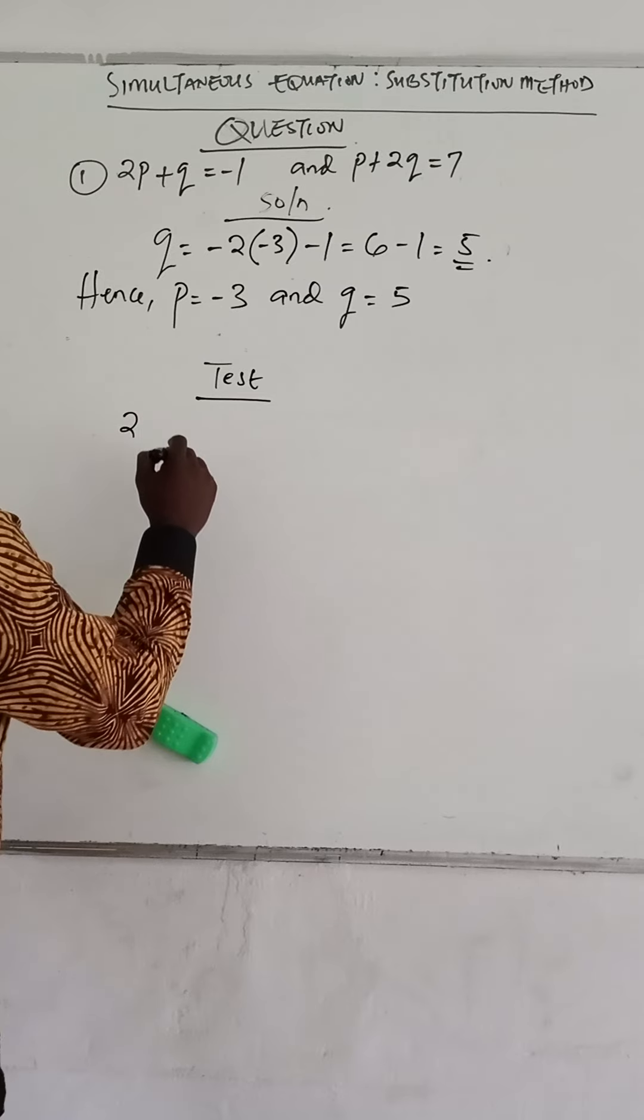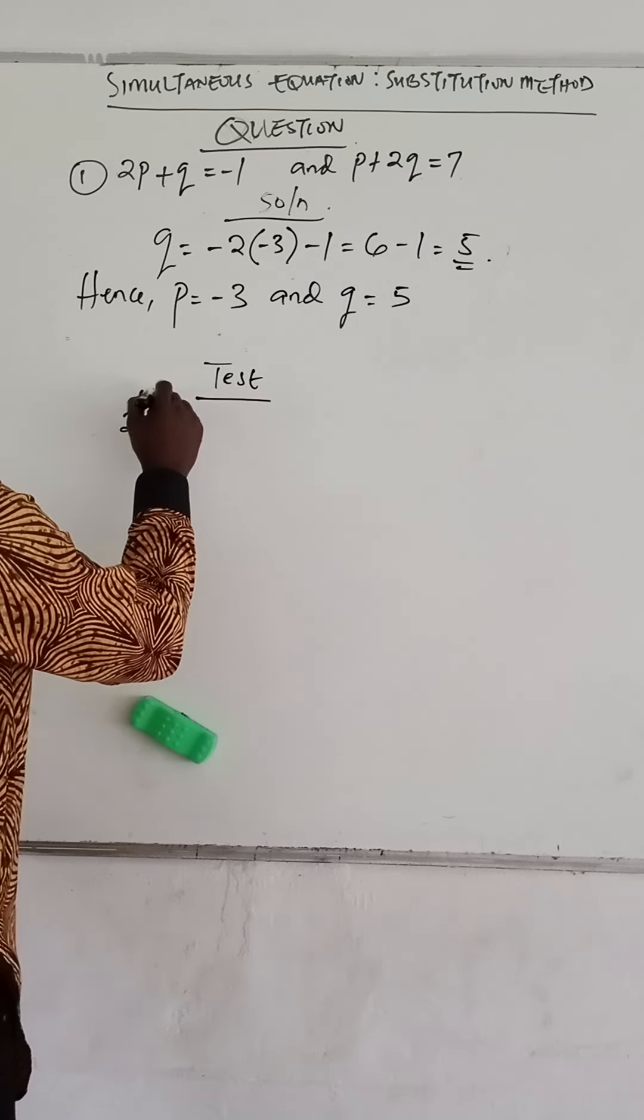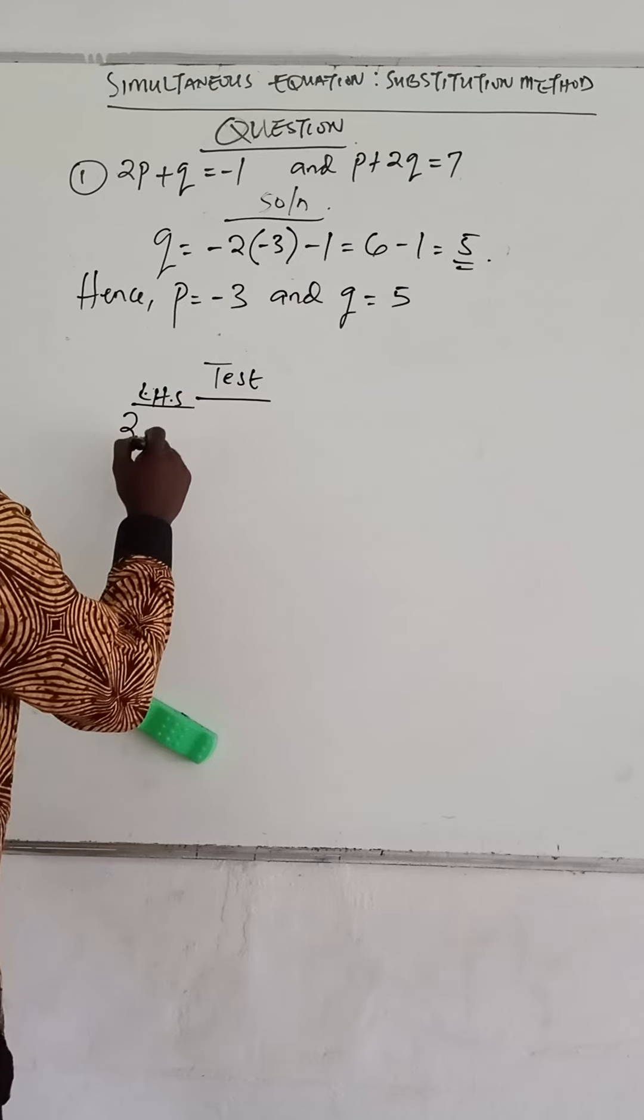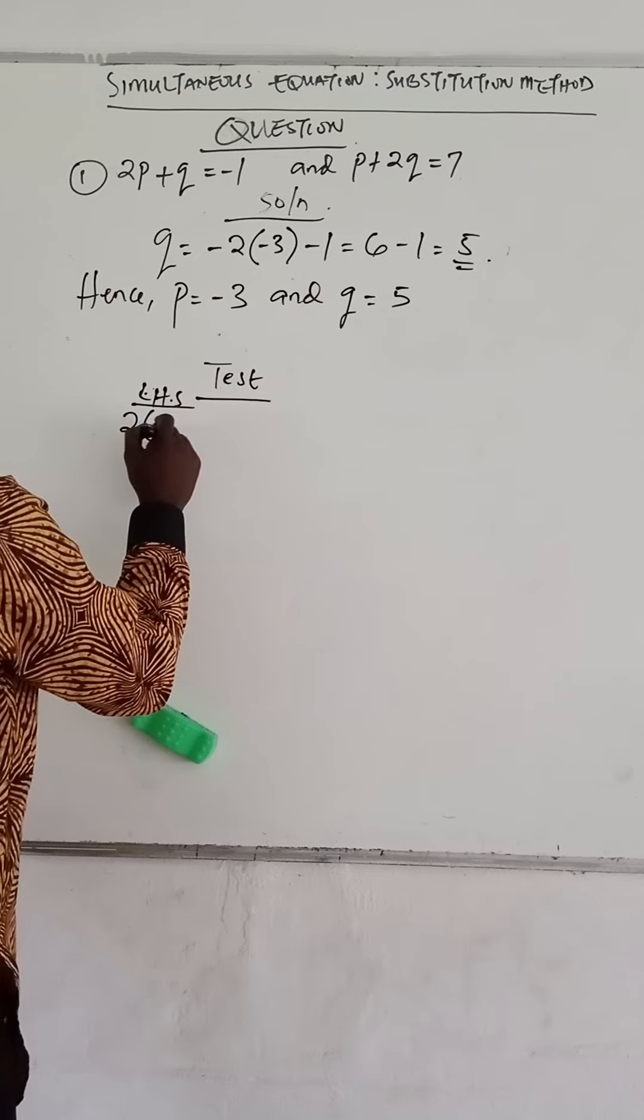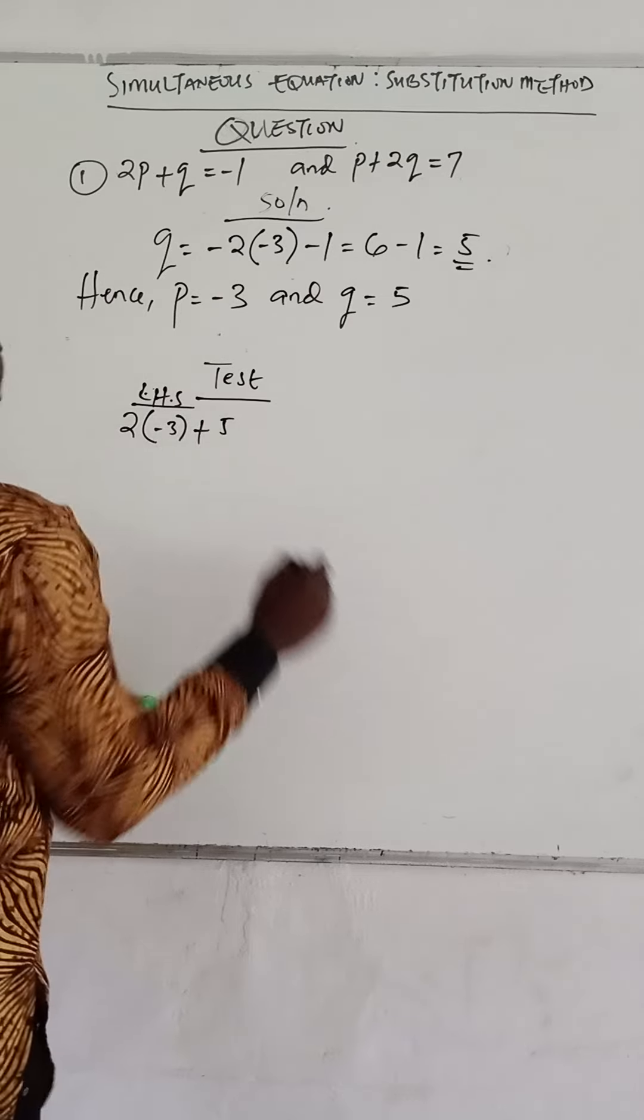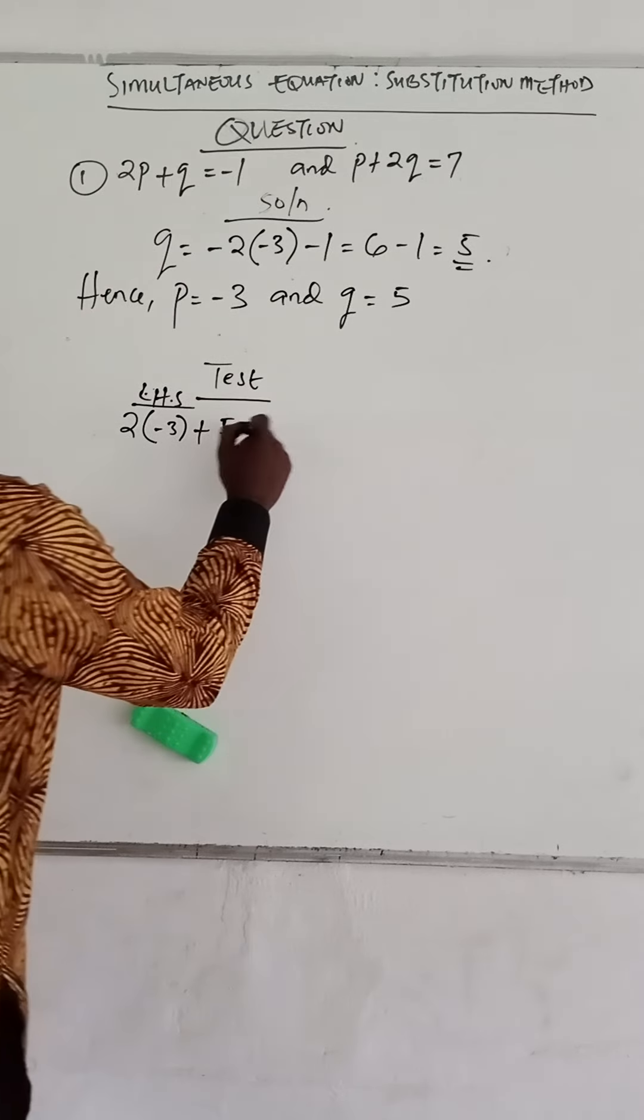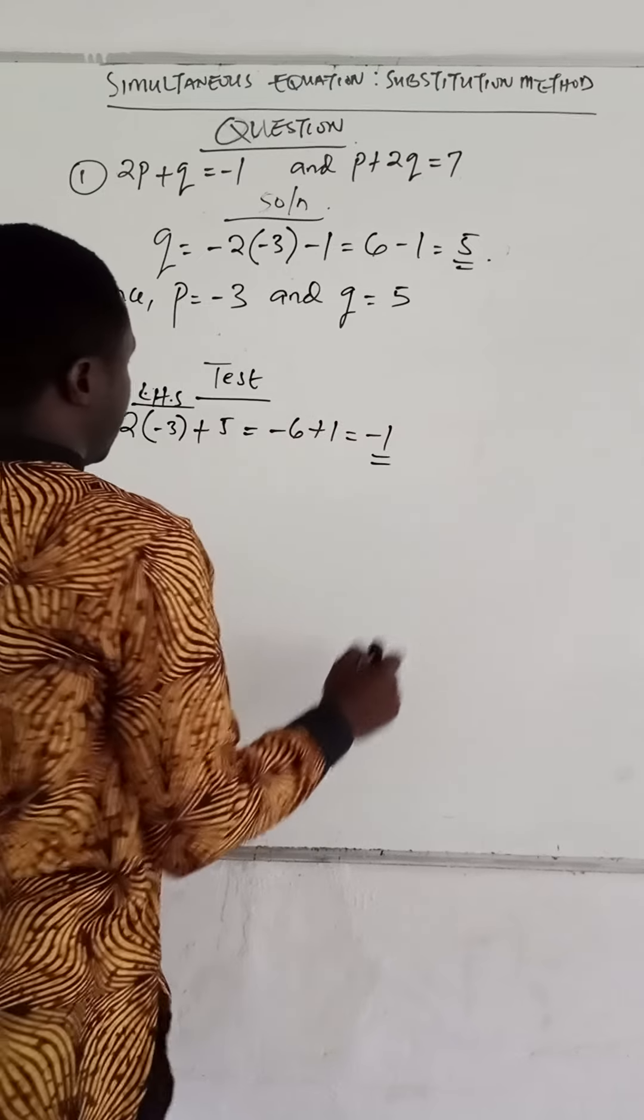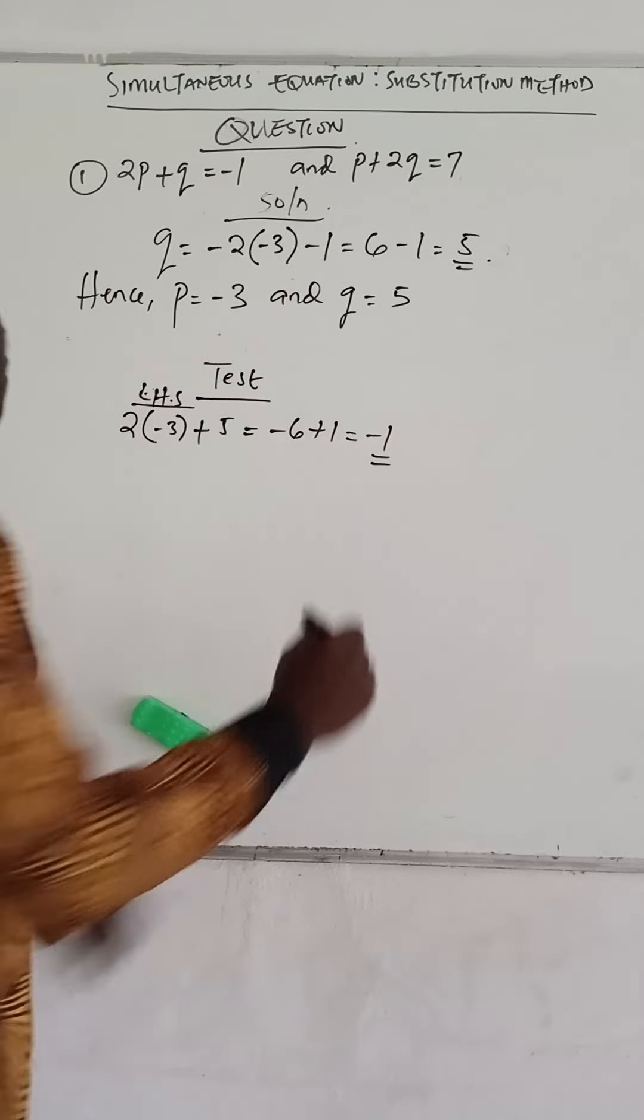Considering the left-hand side of the equation, we have 2p. P here is -3, plus q. Q here is 5. Let's see whether we have -1. This becomes -6 + 5 = -1. Hence our solution is correct.